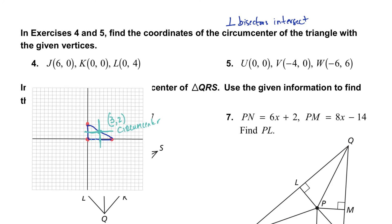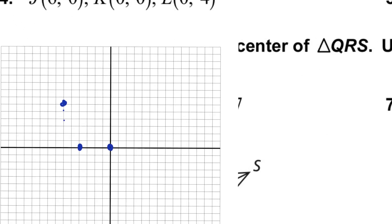Let's do this again for the next problem. The new vertices are (0, 0), (−4, 0), and (−6, 6). Let me label these: this point is U, this point is V, and this point is W. This triangle looks like this, and now we need to draw the perpendicular bisectors.